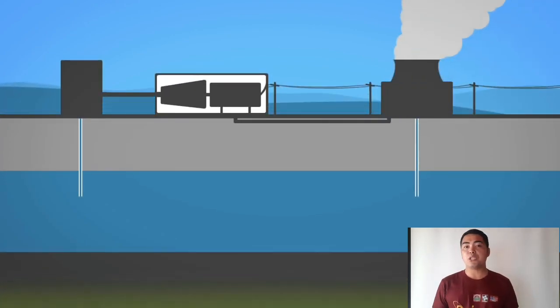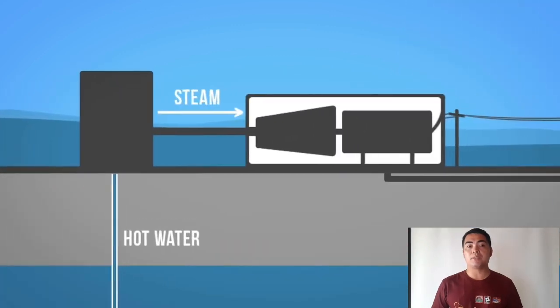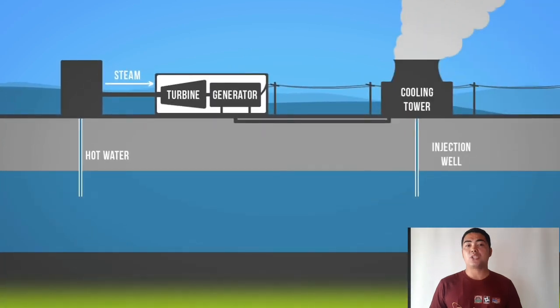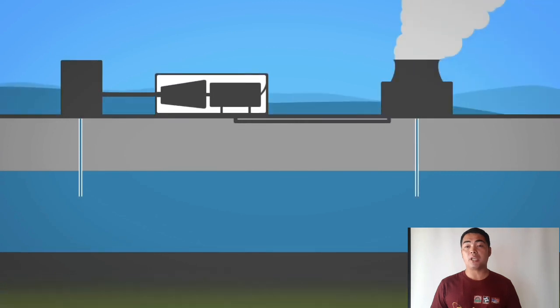Geothermal heat can also be used to produce electricity in geothermal power plants. Electricity is generated when geothermal heat produces steam that turns the turbines on a generator.